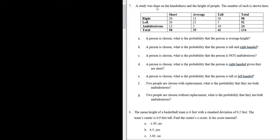Let's do number 7. A study was done on the handedness and the height of people. The number of each is shown here, so we have this table. Let's go ahead and answer part A. So a person is chosen. What is the probability that the person is average height? So let's do it.